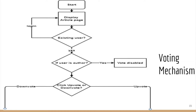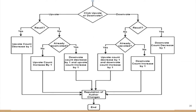If the user is not the author, they can click upvote or downvote. If they click upvote, the system checks if they are recalling that upvote — if so, the upvote count decreases by 1. If not recalling, the system checks if they already downvoted: if yes, the downvote count decreases by 1 and the upvote count increases by 1; if no, the upvote count increases by 1. Similarly for downvoting: if recalling, downvote count decreases by 1; if not, the system checks if they already upvoted — if yes, upvote count decreases by 1 and downvote count increases by 1; if no, downvote count increases by 1. All these lead to reputation changes.